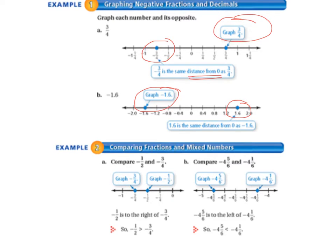Example 2: comparing fractions and mixed numbers. Compare negative 1 half and negative 3 fourths. If we look at negative 1 half and negative 3 fourths on the number line, negative 1 half is to the right of negative 3 fourths. So negative 1 half is greater than negative 3 fourths.